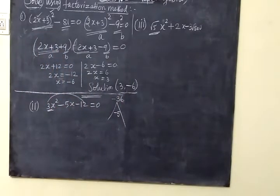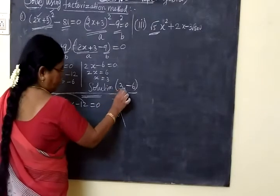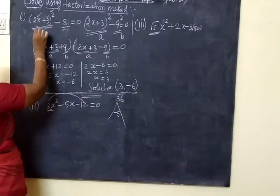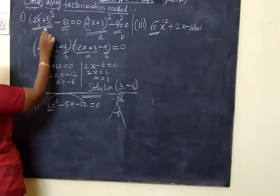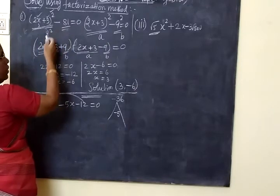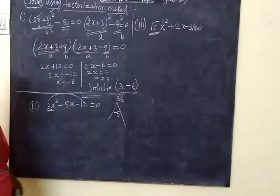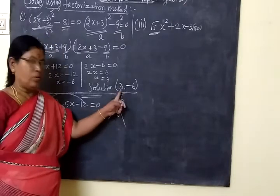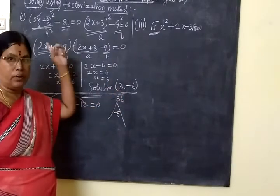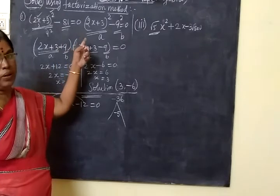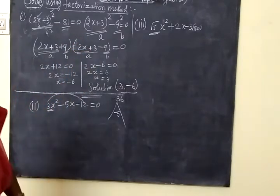We check the answer. 3, minus 6 is correct. Now we will substitute 2x equal to 3. If you substitute 3, then 3 times 2x equal to 6. 6 plus 3 is 9. 9 squared minus 81. So 9 squared is 81. 81 minus 81 is 0. So what we got is the solution. Now we go to the second one.